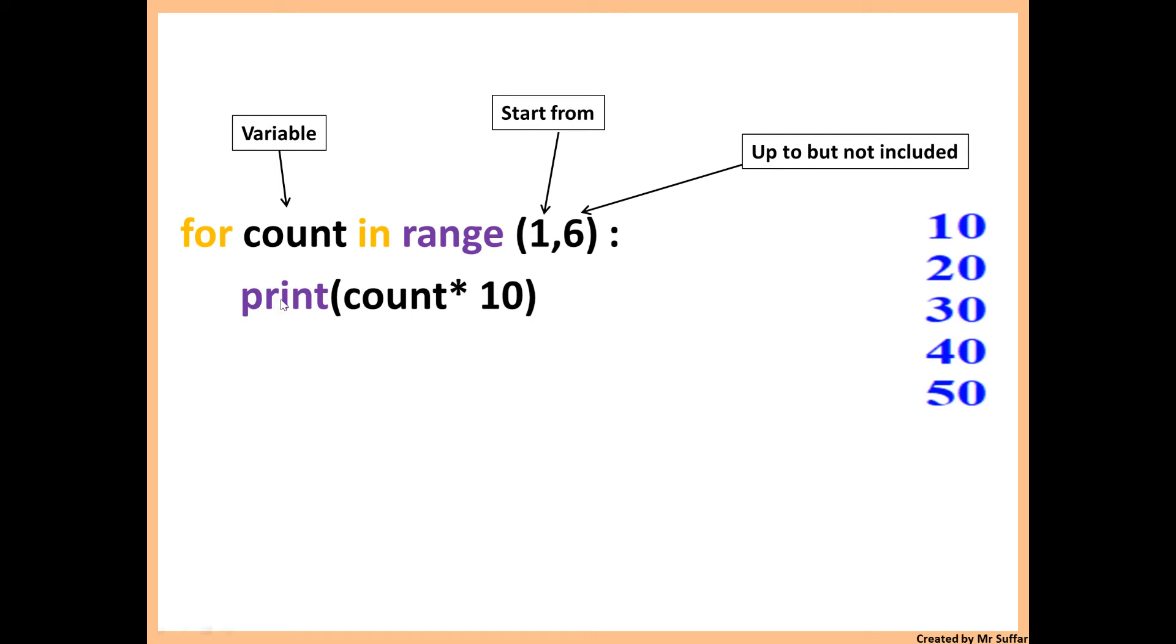Then we're displaying print count times 10. Count starts with 1, 1 times 10 is 10 as you can see on the right side. Then it goes to 2, 2 times 10 is 20, and so on. It goes up to 5, 5 times 10 is 50. This will give us the 10 times table from 1 to 5.